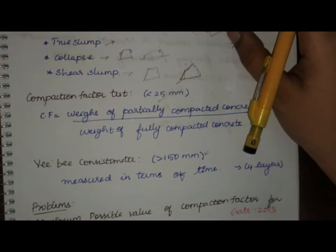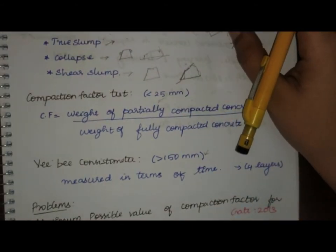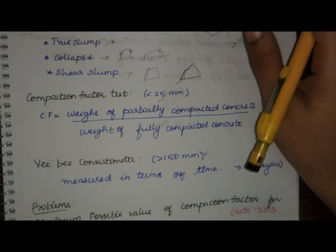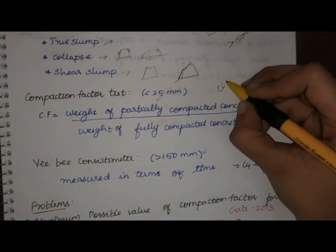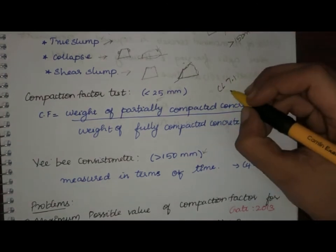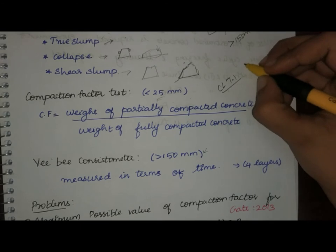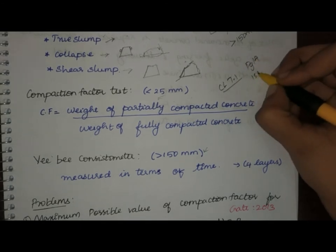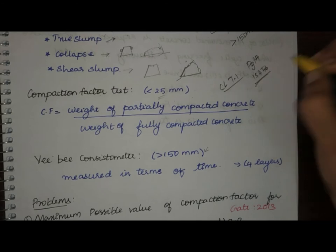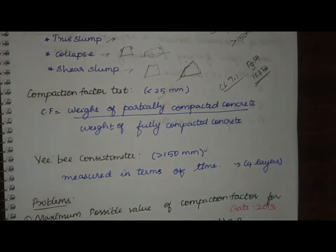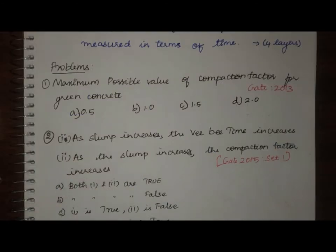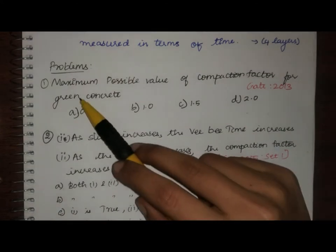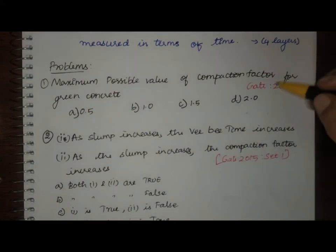That covers the properties of fresh concrete. I would also recommend learning clause 7.1 and the table near clause 7.1, page number 17 in IS 456 — that will help you in one-mark questions. Now let us look at some problems that have been asked in previous GATE papers.